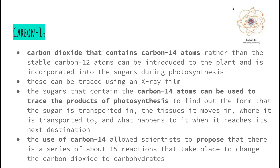A specific example of a radioisotope is carbon-14. Carbon usually has an atomic mass of 12, with 12 protons, 12 neutrons, and 12 electrons. However, carbon-14 has two extra neutrons, making it an isotope. Carbon dioxide containing carbon-14 atoms, rather than the normal stable carbon-12 atoms, can be introduced into the plant, and this carbon dioxide gets incorporated into the glucose produced during photosynthesis. Scientists can introduce this labeled CO₂ and trace its path through the plant.